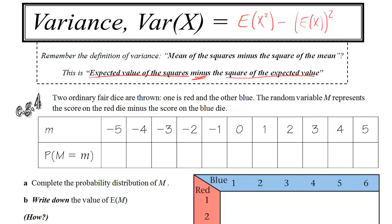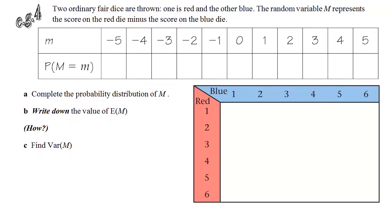An example. We've got two ordinary dice. One is red and one is blue. We've got a random variable, m, which represents the score on the red die minus the score on the blue die. We're asked to do a probability distribution for m. To do that, we need to do a sample space first. And that's what this little table is for.